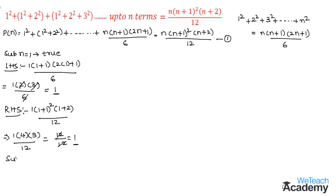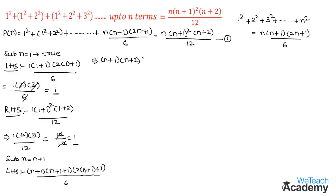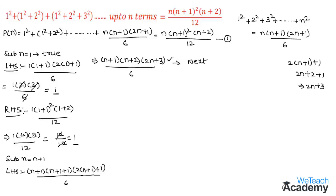Now let us substitute n = n+1 in the nth term of the LHS. We get (n+1)·(n+2)·(2(n+1)+1) divided by 6, which simplifies to (n+1)(n+2)(2n+3) divided by 6. This is the next term in the expansion of equation 1.